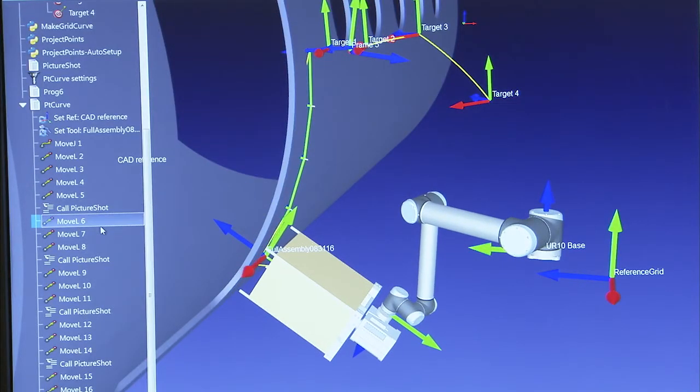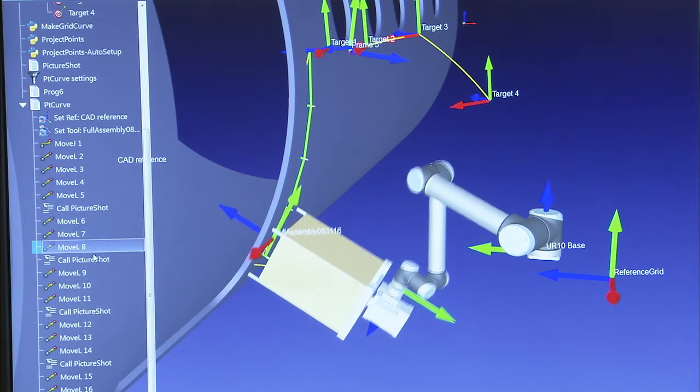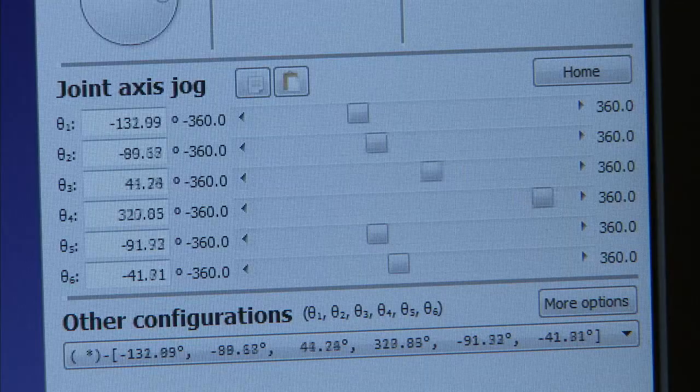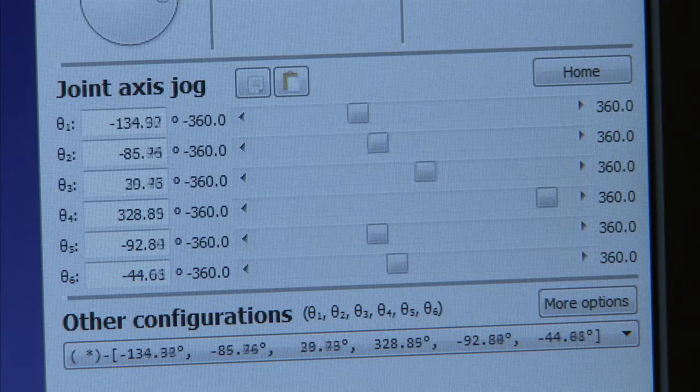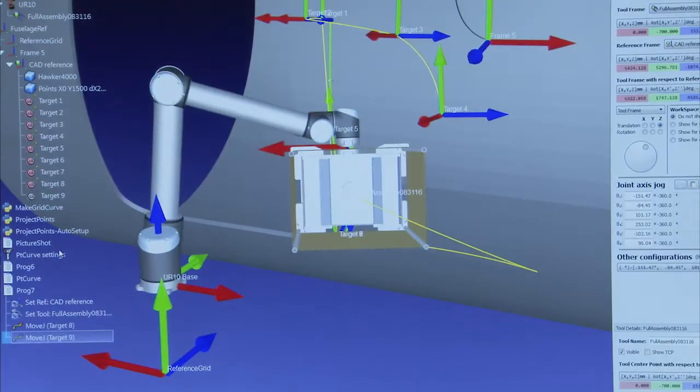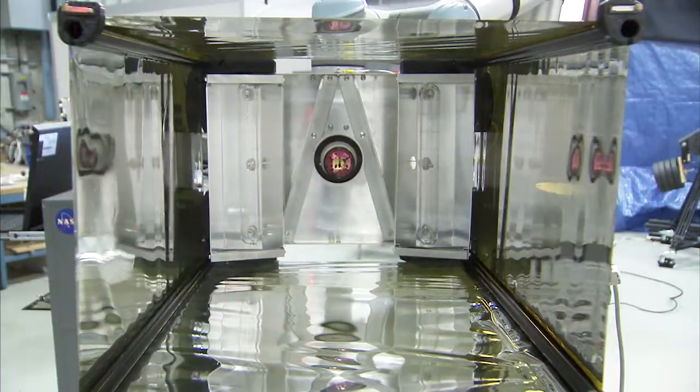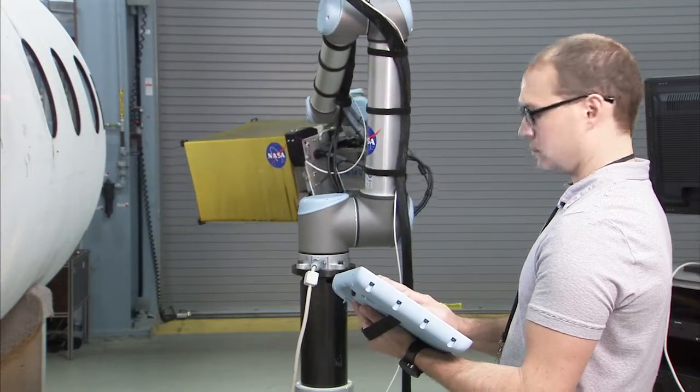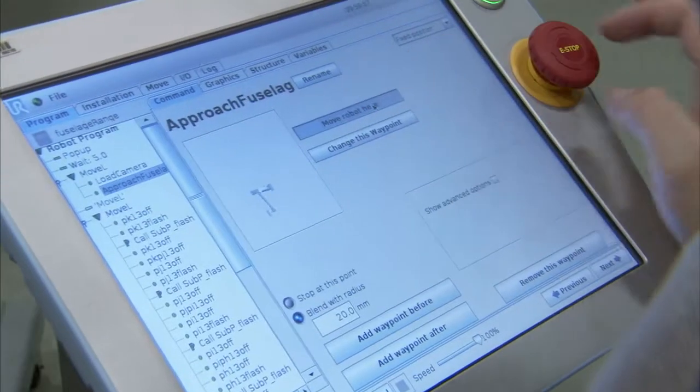And within the computer, you develop the path that you're going to go. You develop each of the inspection sites. You test to make sure that's the most efficient path and that the robot can make all the moves that you need to make. Then when you come out to the fuselage, it's very simple to just download that program to the robot and it now follows the path that you've pre-programmed.